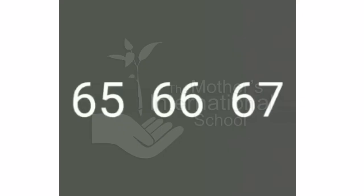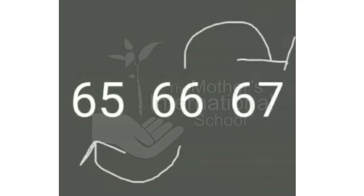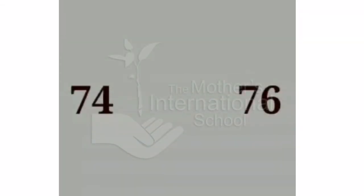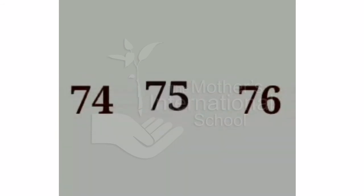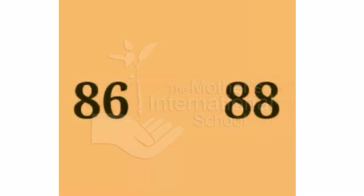Now between numbers — numbers that come in between two numbers means the middle one. 66 is the between number of 65 and 67. Which number comes in between 74 and 76? Yes, 75 is between 74 and 76. Which number comes between 86 and 88? Yes, 87 is the number between 86 and 88.